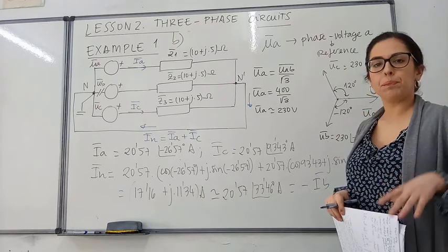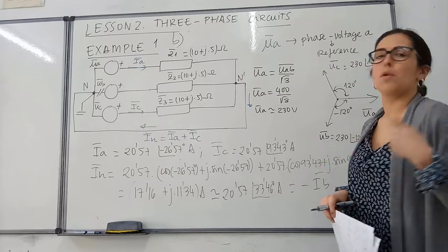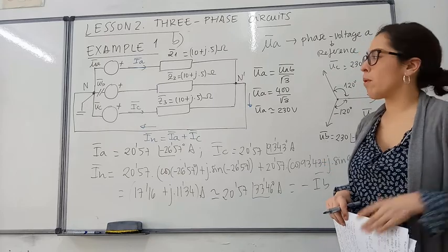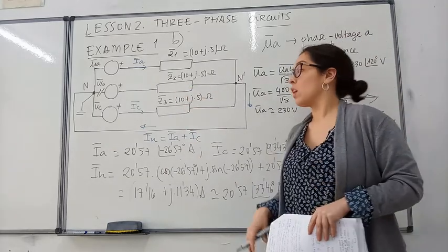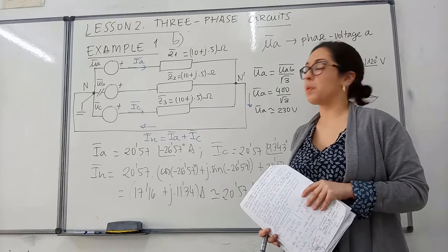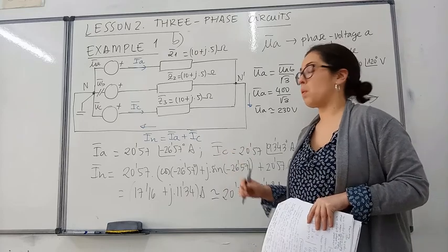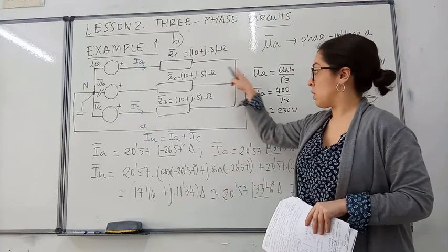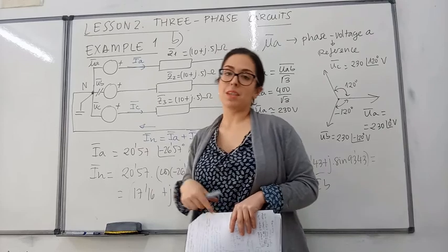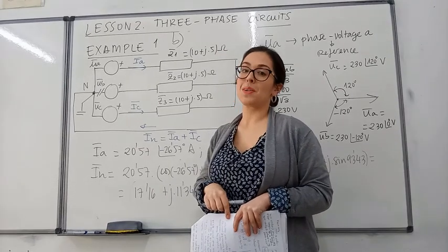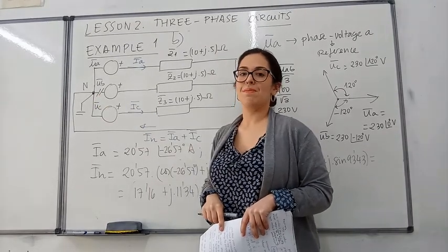That is why, when we have an imbalance or any kind of problem with one phase, we should have the neutral conductor in order to guarantee that we have a path for the current to return to the origin of the installation.